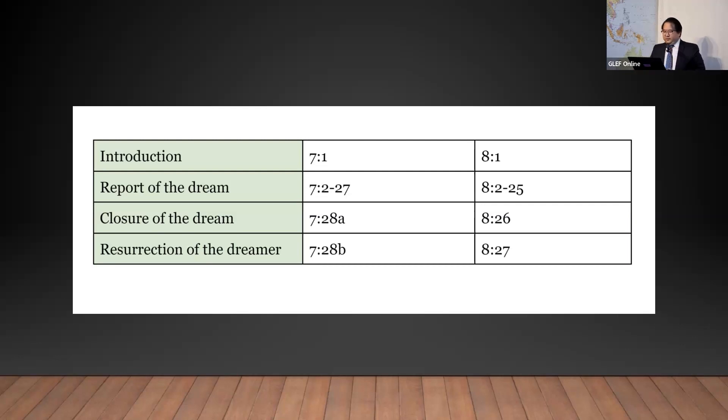According to verse 20, the ram in this vision represents the kings of Media and Persia. The higher horn which later grew forth represents Persia. Under the Persian king Cyrus II the Great, Persia became the dominant power in this alliance.